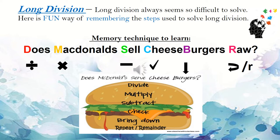So does McDonald's sell cheeseburgers raw? Now boys and girls, you need to by heart, you need to memorize this question. Because if you memorize this question, you will be able to solve your long division. So every time you see a long division sum, write on the side: Does McDonald's sell cheeseburgers raw? And remember, D is for divide, M for multiply, S for subtract, C for check, B for bring down, and R for repeat or remainder.